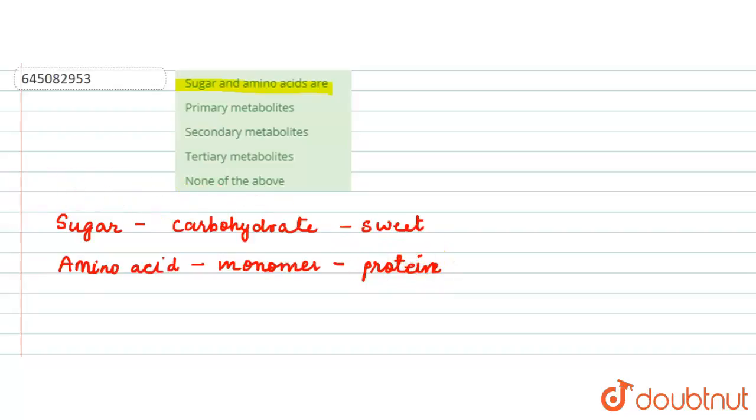Now, one thing is that both of these, like your sugar and amino acid, are primary metabolites. That means that they are first biomolecules synthesized from inorganic elements like your nitrogen, carbon, hydrogen and oxygen.